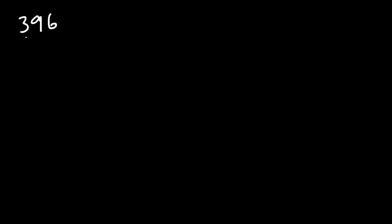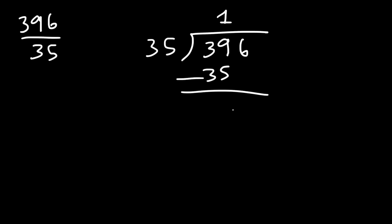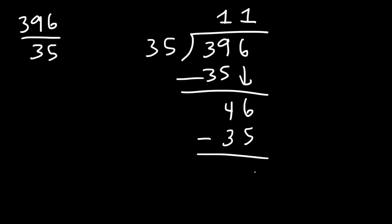So let's simplify the fraction 396 over 35 using long division. 35 goes into 39 one time — 39 minus 35 is 4. Bring down the 6: 35 goes into 46 one time, 35 times 1 is 35, and 46 minus 35 is 11. So the answer is 11 and 11 over 35.